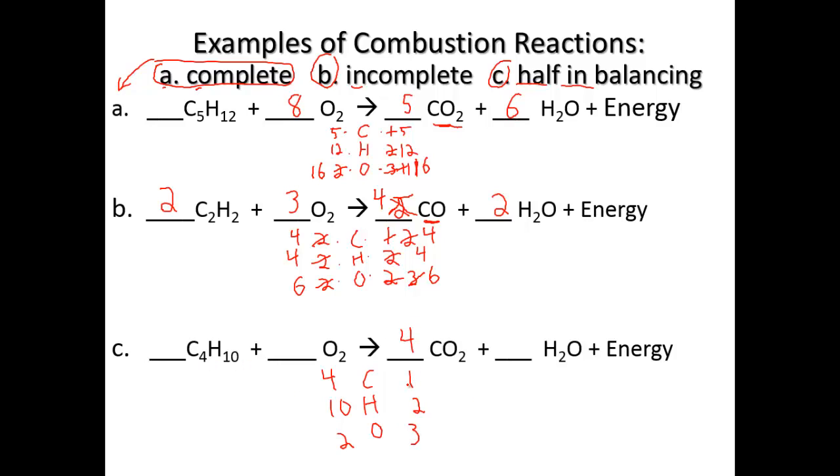So four gets us to four carbons, and eight plus one gets us to nine oxygens. For hydrogens, ten hydrogens means five H2O, giving five times two equals ten hydrogens. When we look, five times one is five, plus eight gets us to thirteen oxygens. Now the question is, what number times two gets us to thirteen? That number is 6.5.